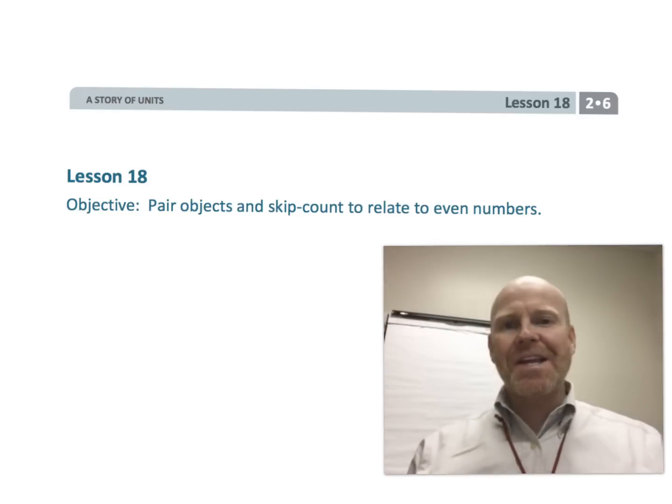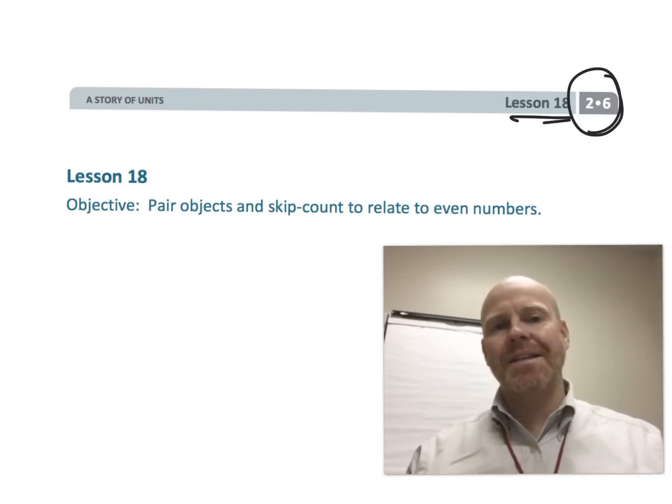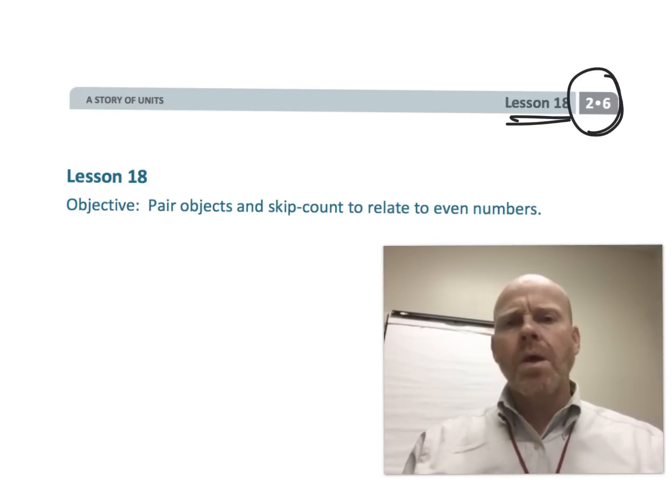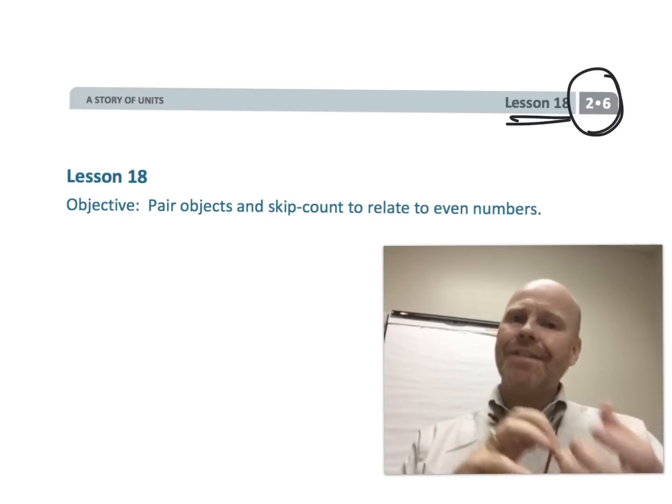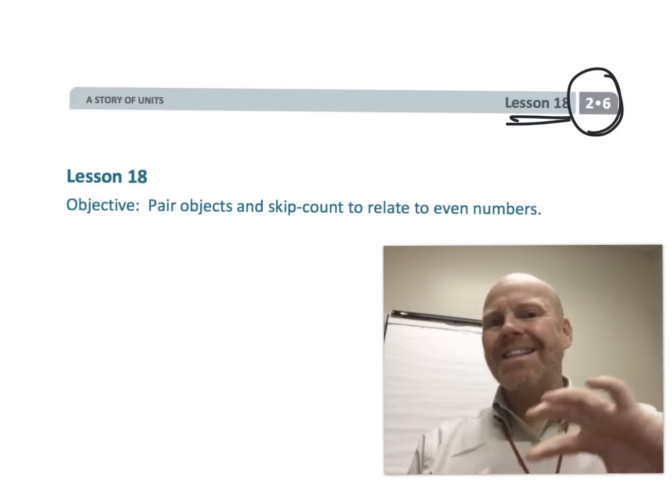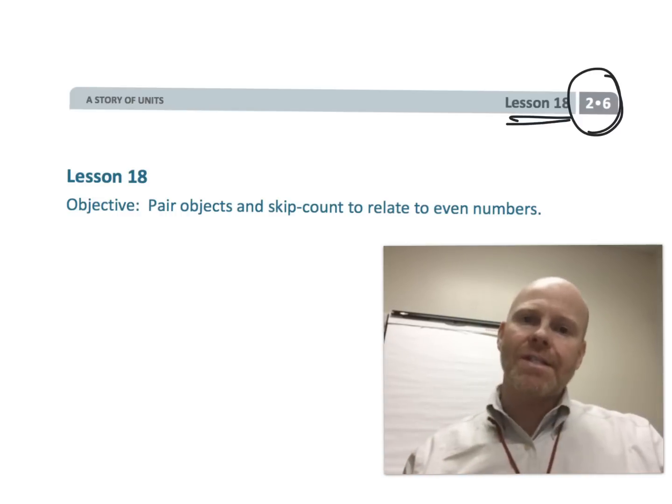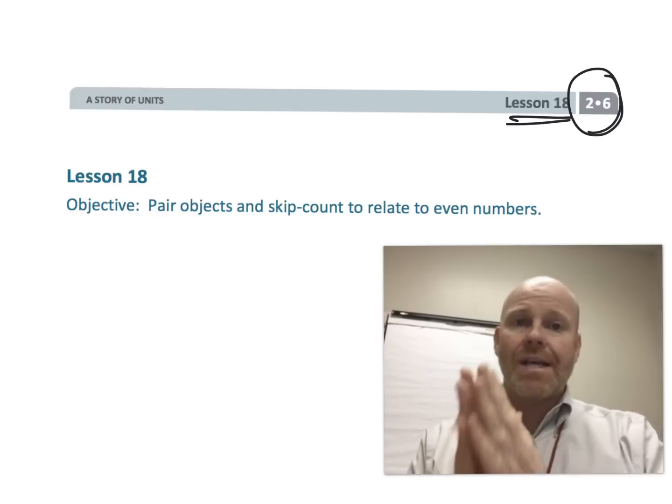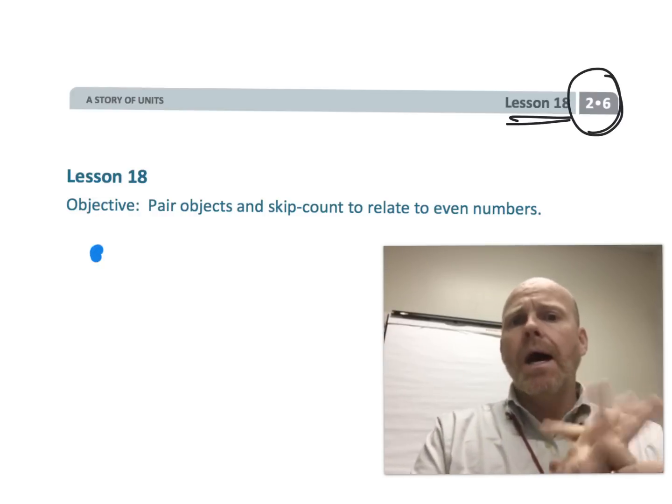This is second grade module 6 lesson 18. In this lesson we're going to think of evens and odds in a slightly different way. Whereas the previous video we thought of evens as the result of doubles, now we're going to be thinking about evens as objects where each member has a pair.